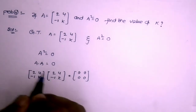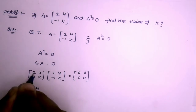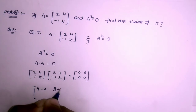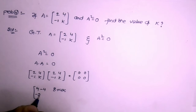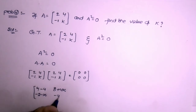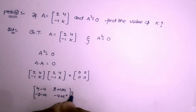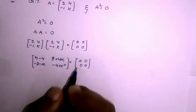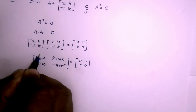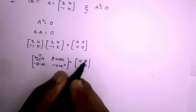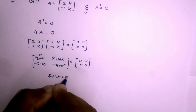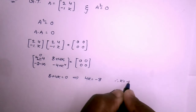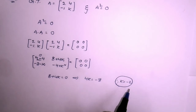Multiplying the matrices: first row by first column: 2×2 + 4×(-1) = 4-4 = 0; first row by second column: 2×4 + 4K = 8+4K; second row by first column: -2-K; second row by second column: -4+K². Setting equal to zero matrix, taking 8+4K = 0 gives 4K = -8, so K = -2. That is the answer.